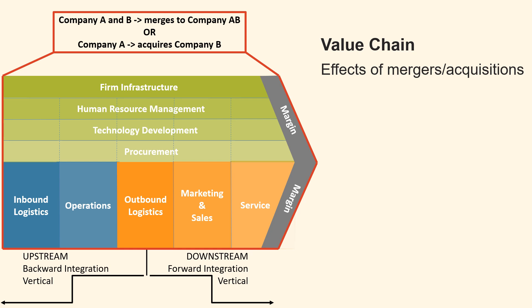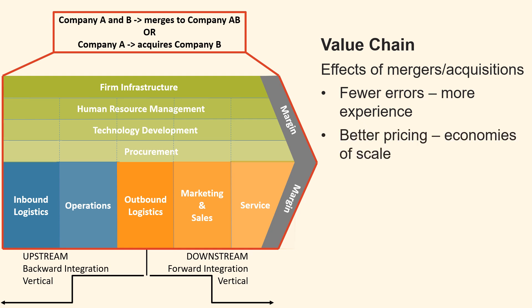Here is how various factors contribute to this effect when a merger or acquisition takes place. Workers and machines become more experienced as production volumes increase, reducing production errors. Consequently, product quality is enhanced over time, decreasing expenses relating to repairs, returns, and warranty claims. Companies often obtain better pricing from suppliers by purchasing larger quantities of raw materials or components. Economies of scale occur as the cost per unit decreases with the increase in order size.